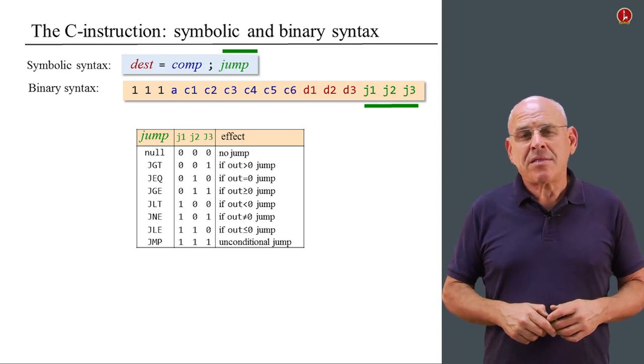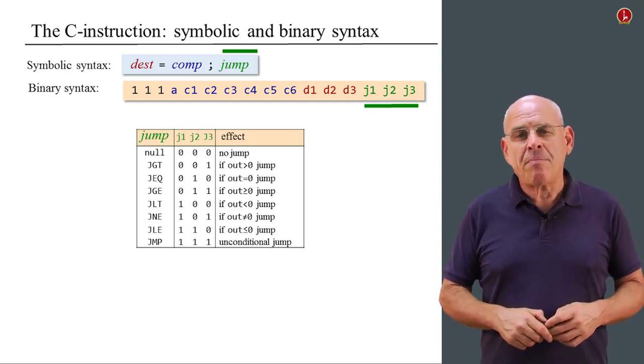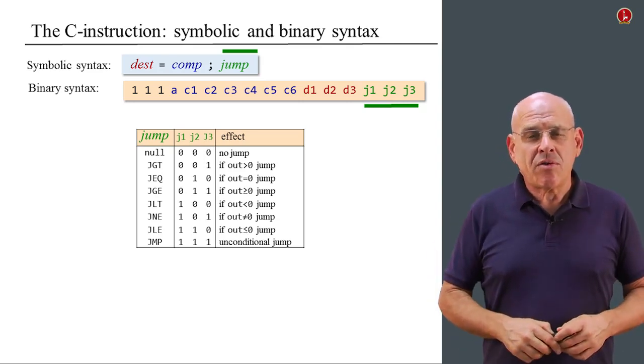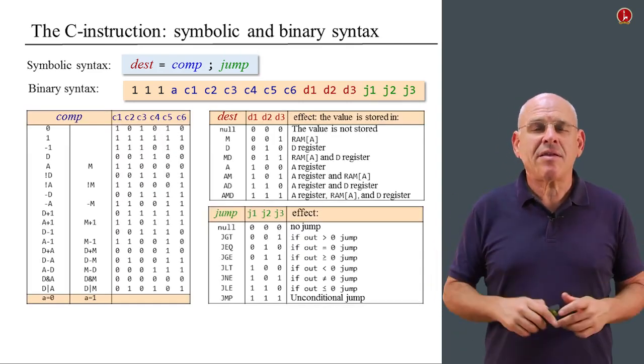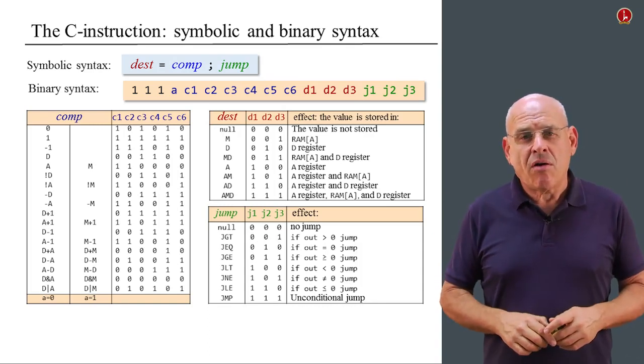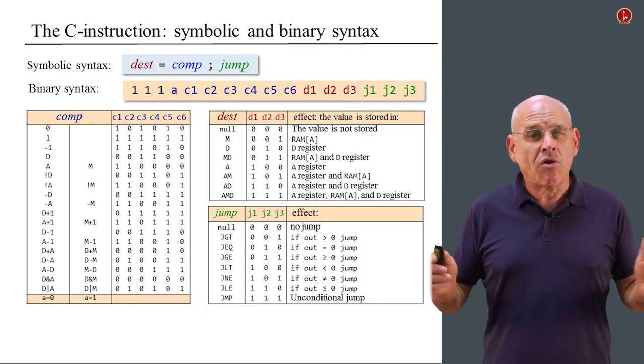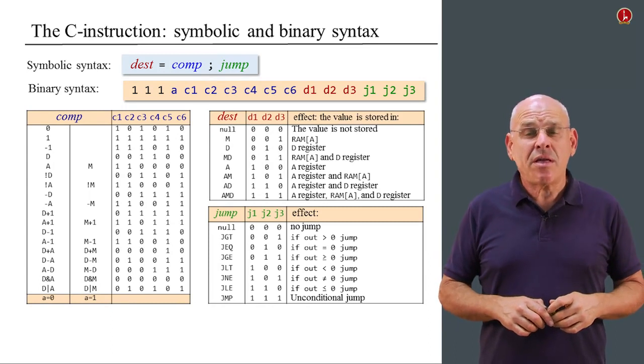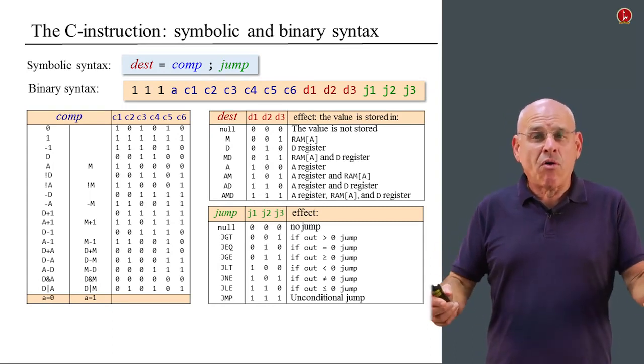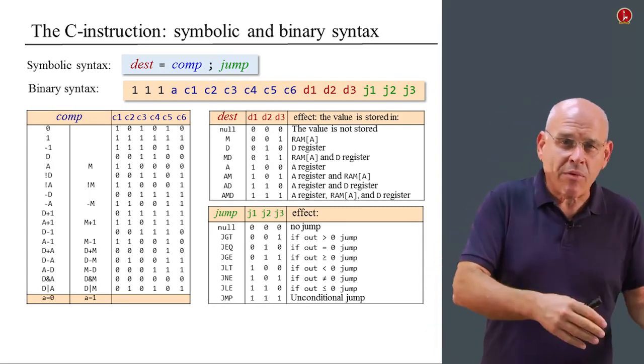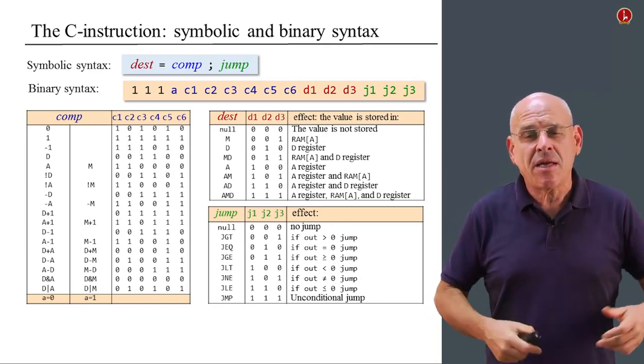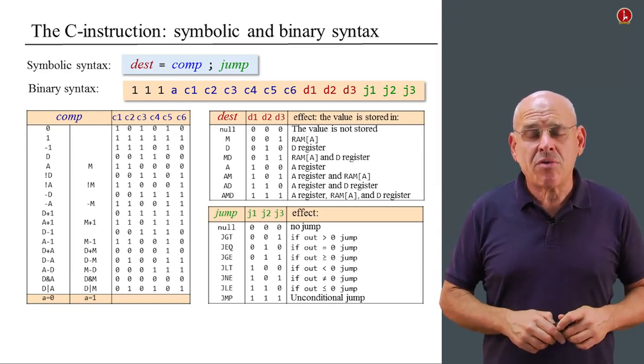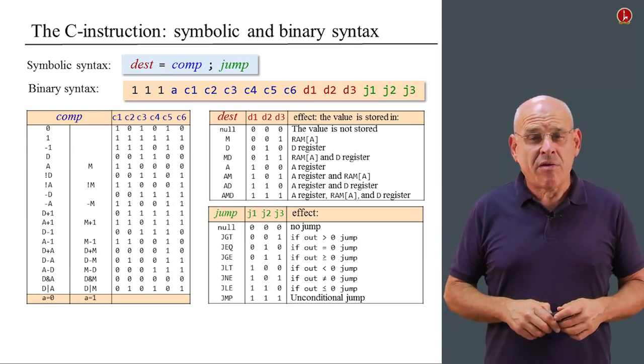So that's it. This basically sums up the mapping between the symbols and the binary codes. If you want to put it all together, we can do it in one slide. And this is a complete specification of the C instruction in all its glory, both in the symbolic rendition and in the binary rendition. And if you had to write a computer program to translate from one language to the other, you can begin to see how you can use this logic in order to write this program. And by the way, this is something that we're going to do in the last week of this course.